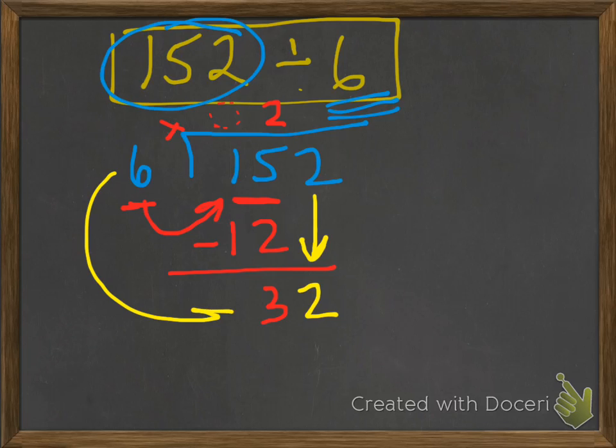So again, we're going to look at that and go, alright, 6 times what gives us 32 or something close to 32? In this case, 5. 5 times 6 is 30.